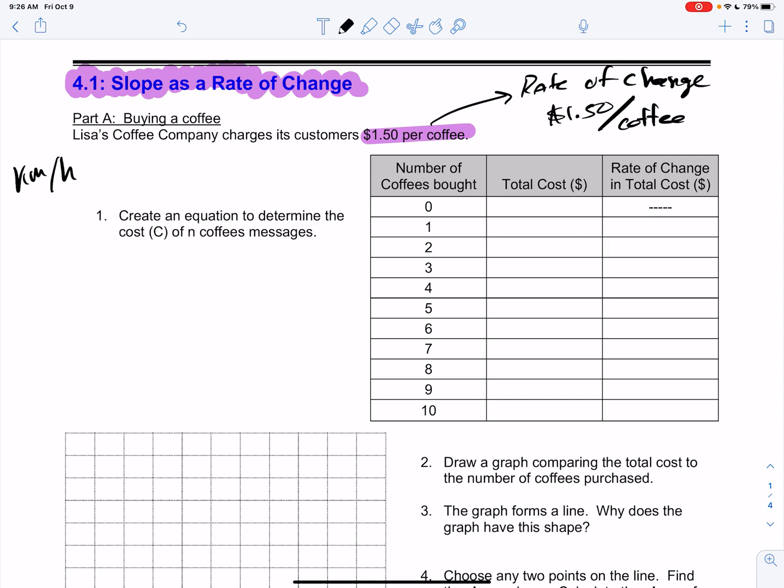So let's take a look at this problem. It says, create an equation to determine the cups of coffee. Well, let's look at the table first, okay? I buy no coffees, it's going to cost me nothing. I buy one coffee, I'm paying $1.50. Two coffees, $3.50. And you can see here, every time you add a cup of coffee, it's a pretty simple equation. You're just going to add $1.50, all right? I buy eight cups of coffee, you're at $12, $13.50, and lastly, $15 for 10 cups of coffee.